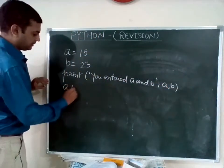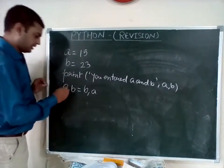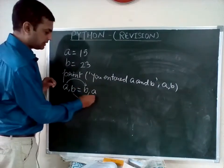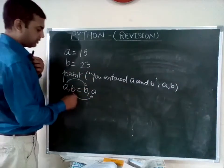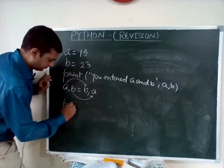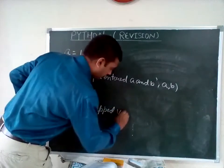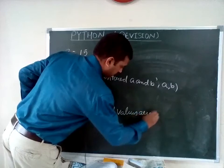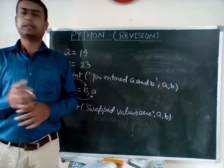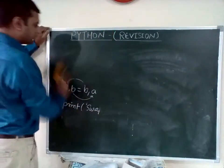Now if you write a, b = b, a — this is a simple statement to swap the numbers. The first a will take the value of b and b will take the value of a. Then you can give the print message for the swapped values. So this was the program to swap the numbers.